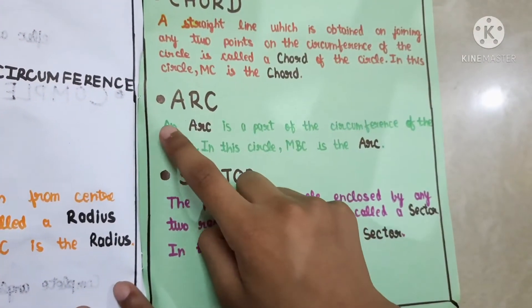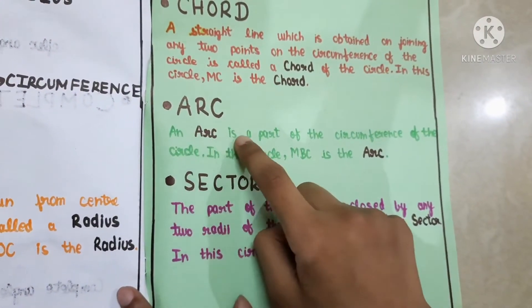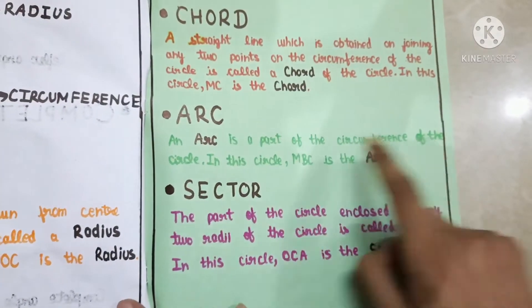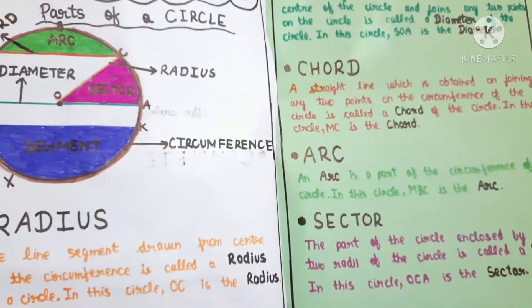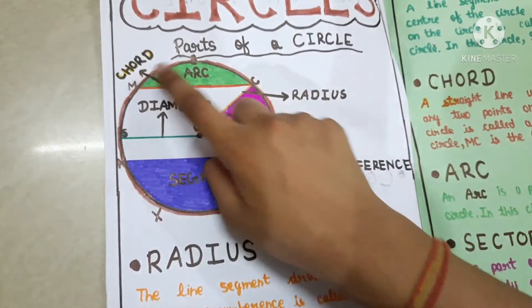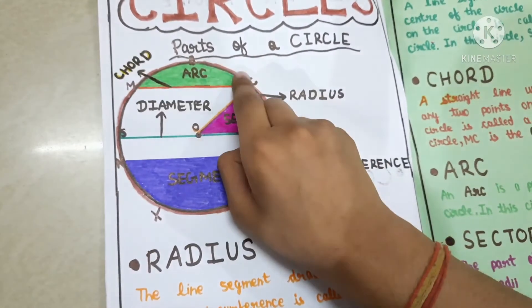Arc: an arc is a part of the circumference of the circle. In this circle, MC is the arc.